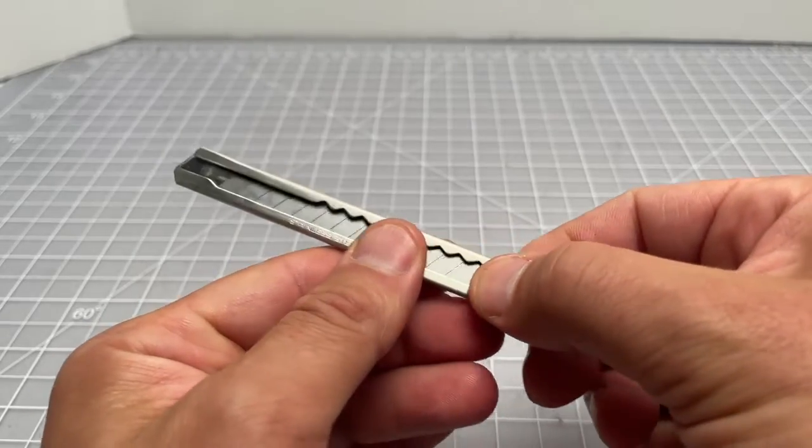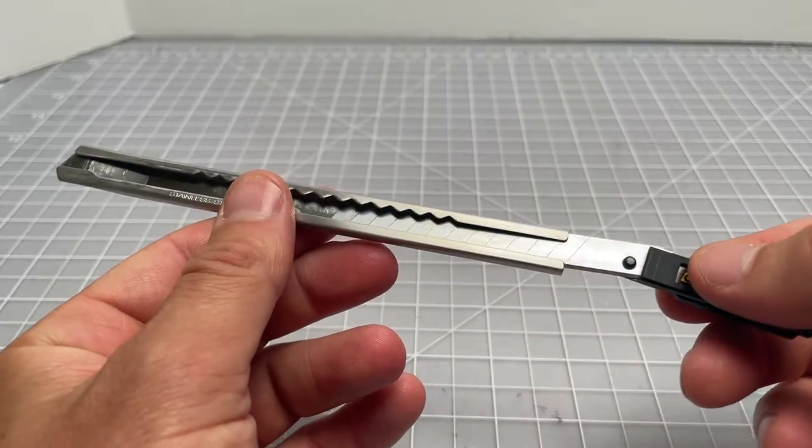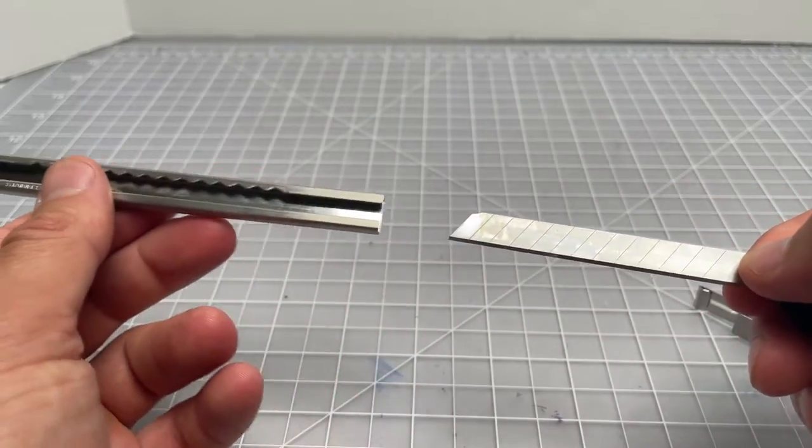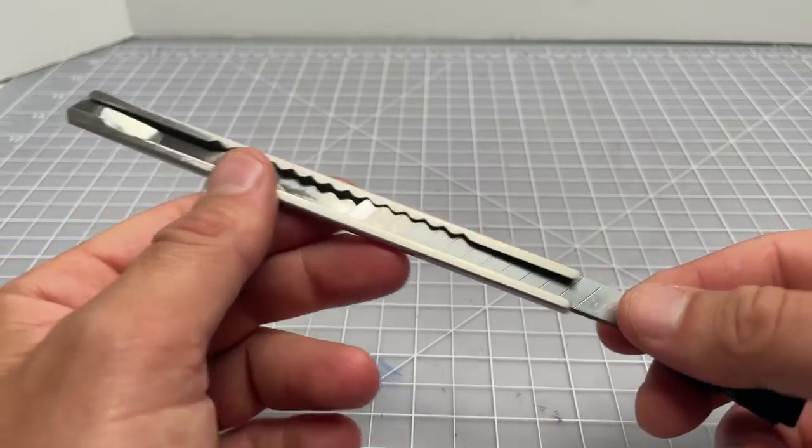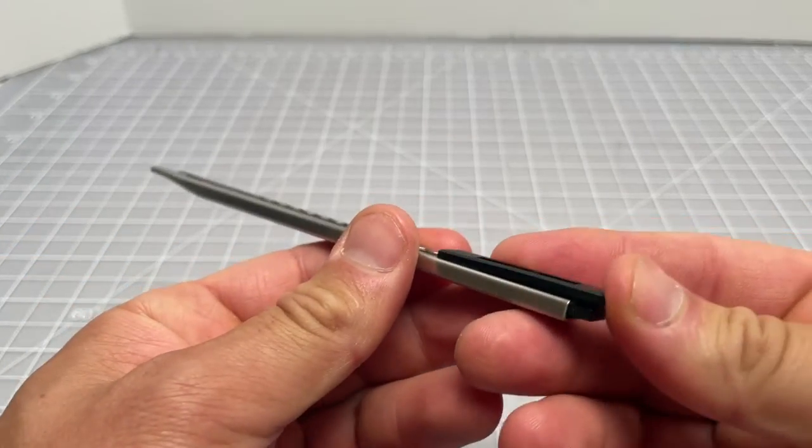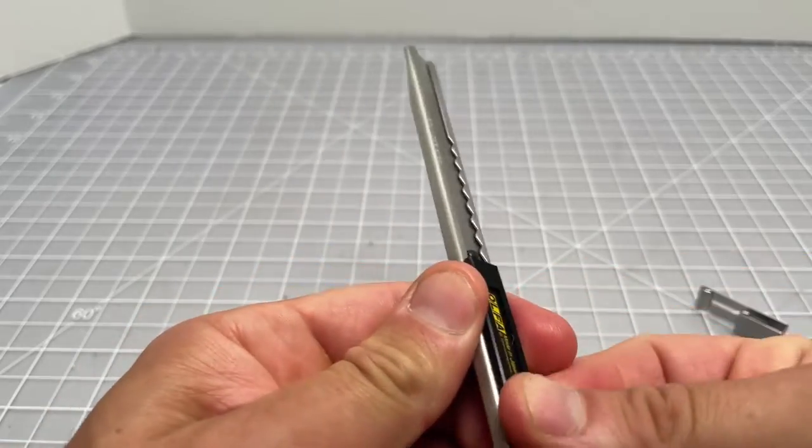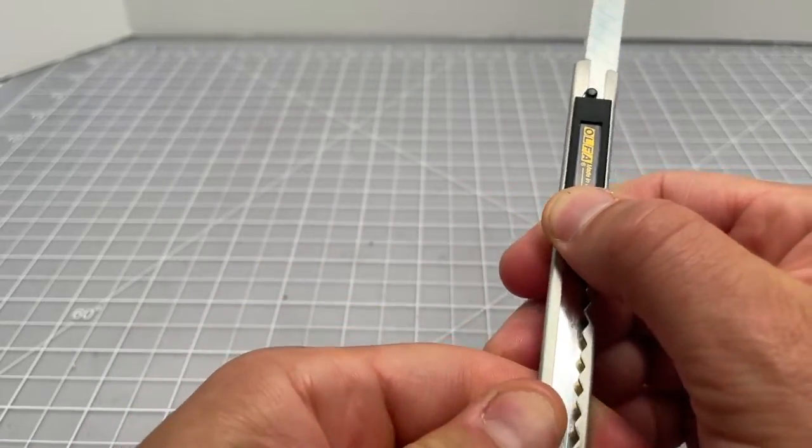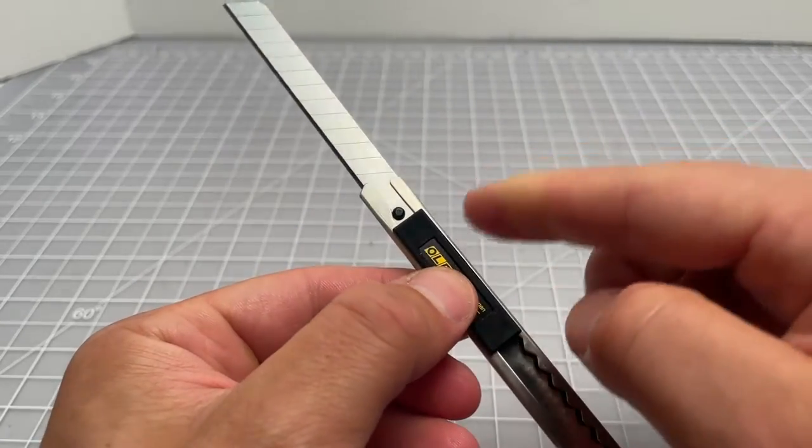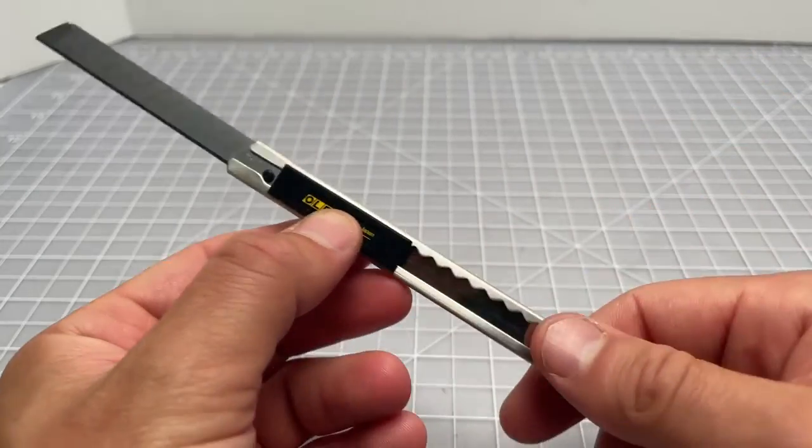And now you pull the entire blade apparatus out. I've seen it seems more obvious that you would try to push it out this way and really force it out, but that's not possible. That's just not how you change the blade on this one.